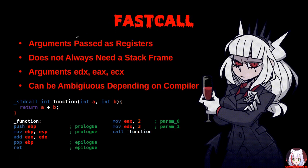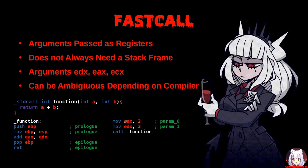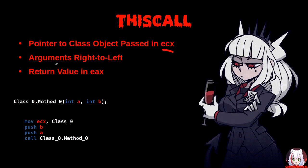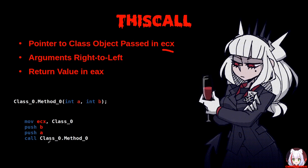FASTCALL passes arguments in registers rather than on the stack and does not always need a stack frame. Arguments are typically placed in EAX, EDX, and ECX, though this can be ambiguous depending on the compiler. In the example, parameter 0 is in EAX and parameter 1 is in EDX; the function is called, the stack is set up, the operation is performed directly on the registers, and the return value is in EAX. No stack cleanup is required. THISCALL is typically used with C++: a pointer to the class object is passed in ECX, arguments are passed right to left, and the return value is in EAX. In the example, the address of class zero is moved into ECX, arguments are pushed, and the method is called.